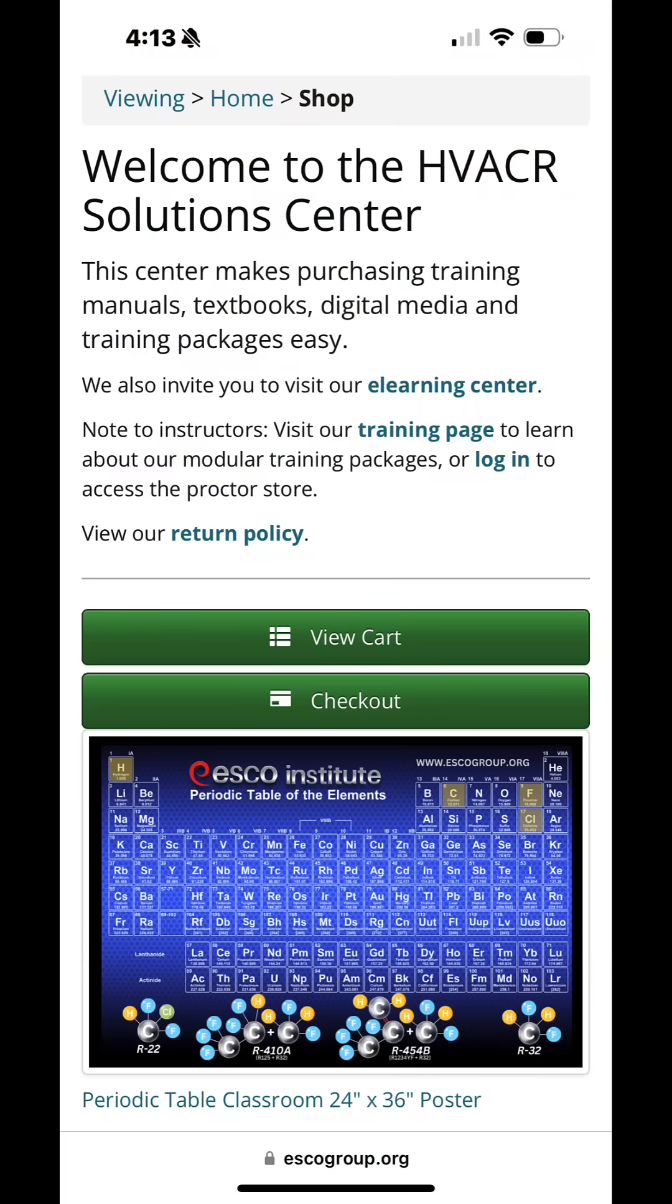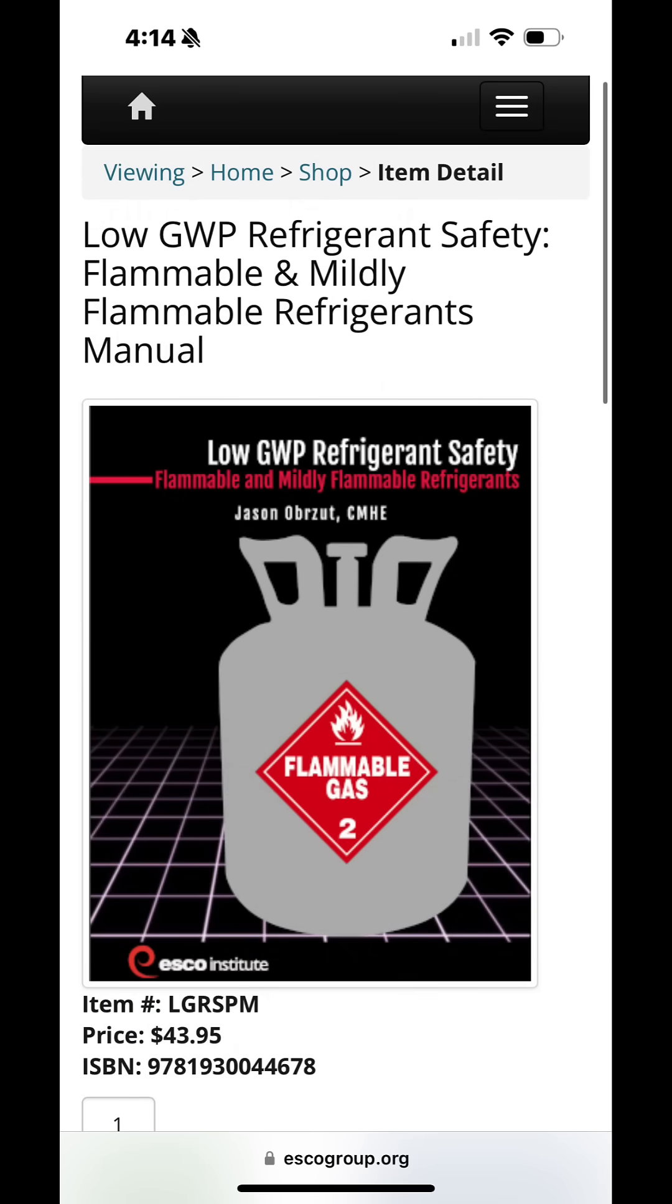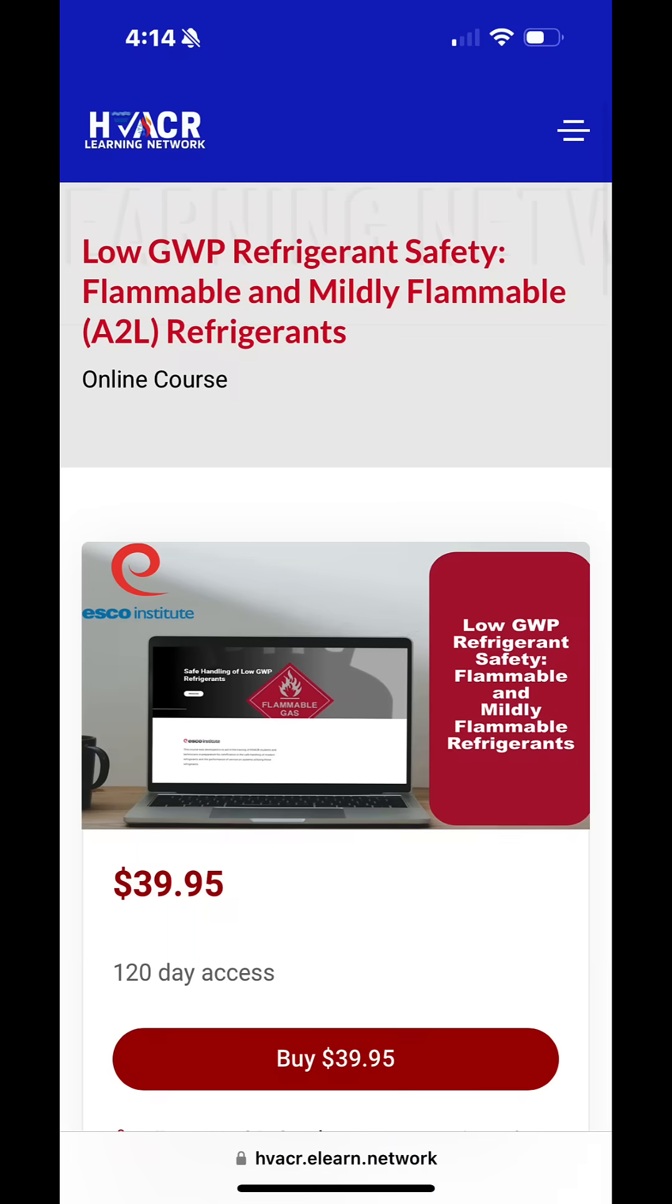Get your periodic table poster with refrigerants at escogroup.org and select the online store. While you're there, check out our Low GWP Safety Training Course. And for the e-learning course, go to the HVACR Learning Network.